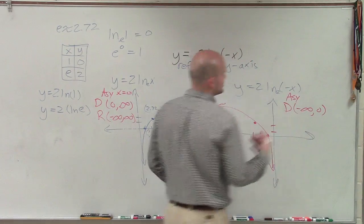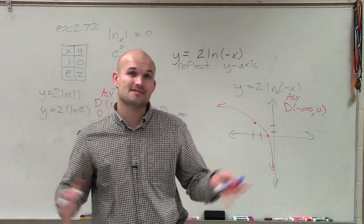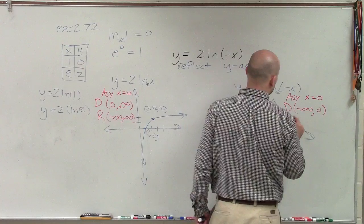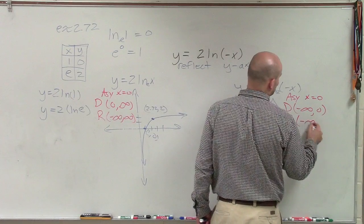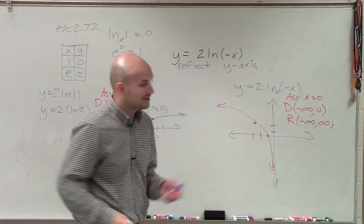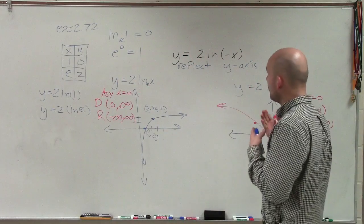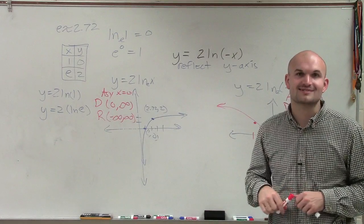My asymptote did not change. Just because I reflected over the y-axis, my asymptote is still going to remain the same, which is x equals 0. And my range has not changed either. That will be from negative infinity to infinity. So there you go, ladies and gentlemen. That is how you graph a natural logarithmic equation with a reflection about the y-axis. Thanks.